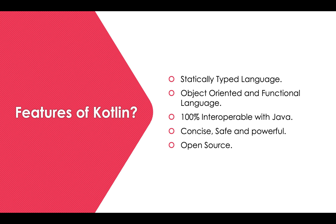Kotlin is concise, safe, and powerful. Estimates indicate that you can cut approximately 40% of the number of lines of code compared to Java. It is also safe and powerful. As mentioned, Kotlin is open source — the code is available on GitHub, so you can contribute if you want.